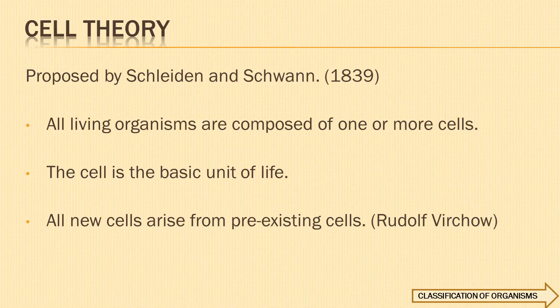All new cells arise from pre-existing cells, which means spontaneous generation cannot be the method for self-organization. Cells can originate only after the division of pre-existing cells. Let us relearn the cell theory: 1. All living organisms are composed of one or more cells. 2. The cell is the basic unit of life. 3. All new cells arise from pre-existing cells.